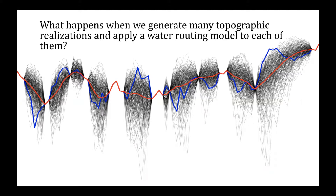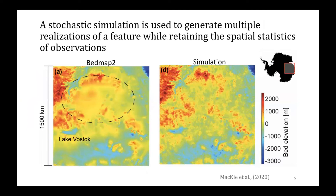The question that I address in this project is: what happens when we generate many topographic realizations and apply a simple water routing model to each of them instead of the average? Does this change our interpretation of the hydrological behavior?